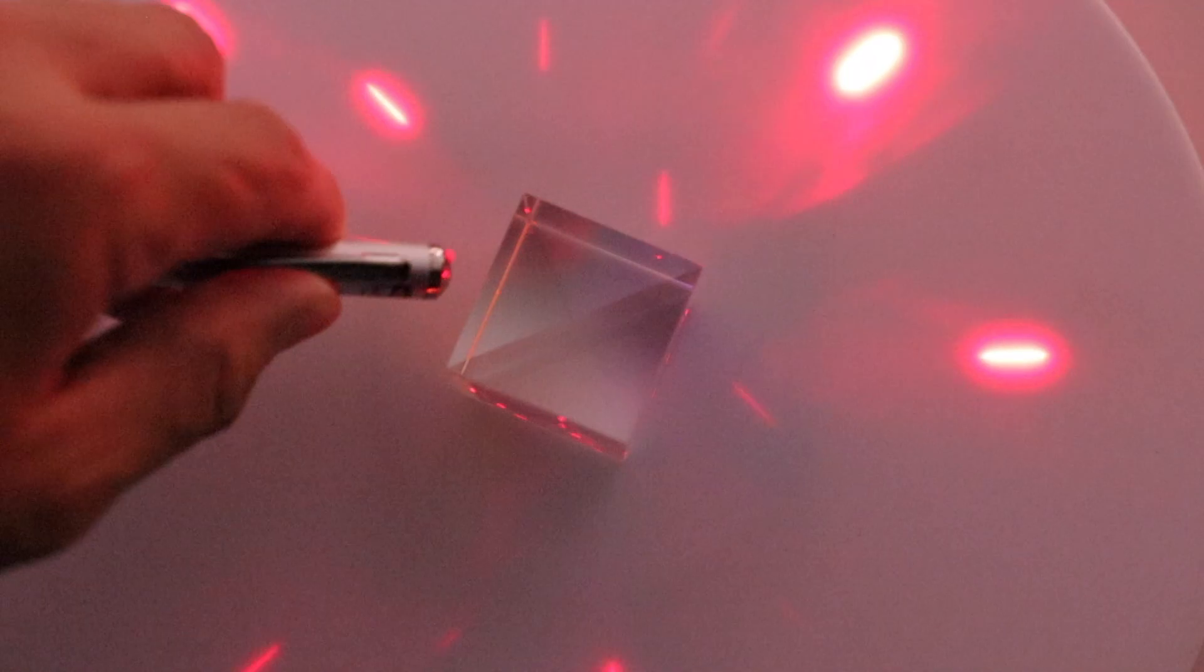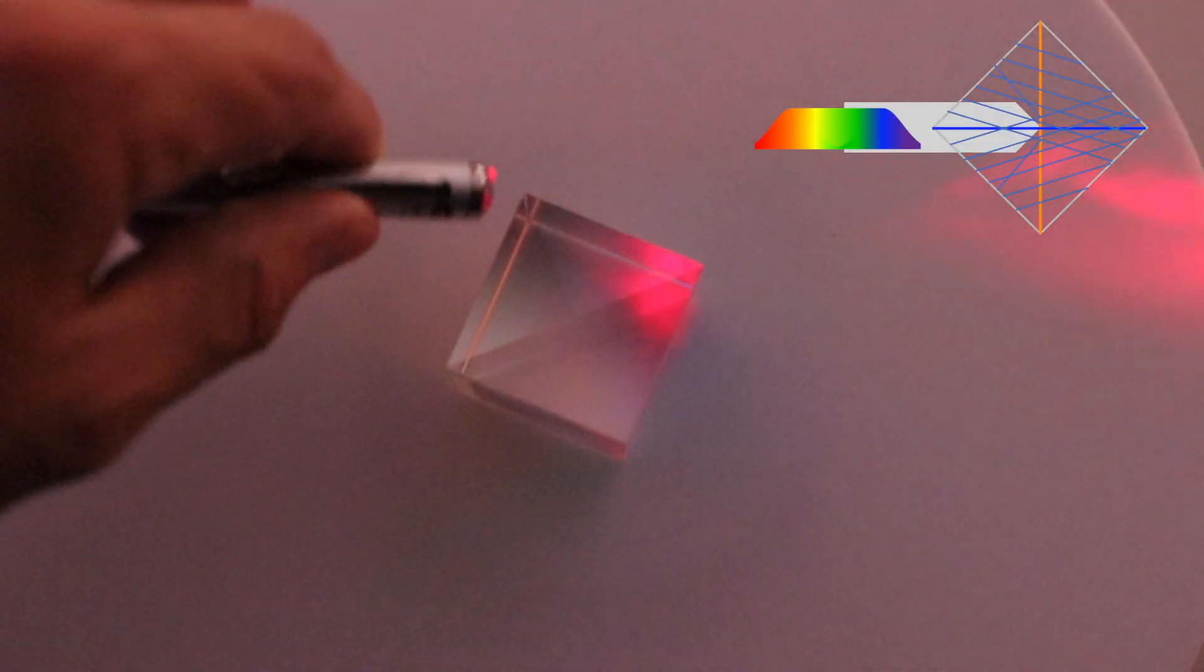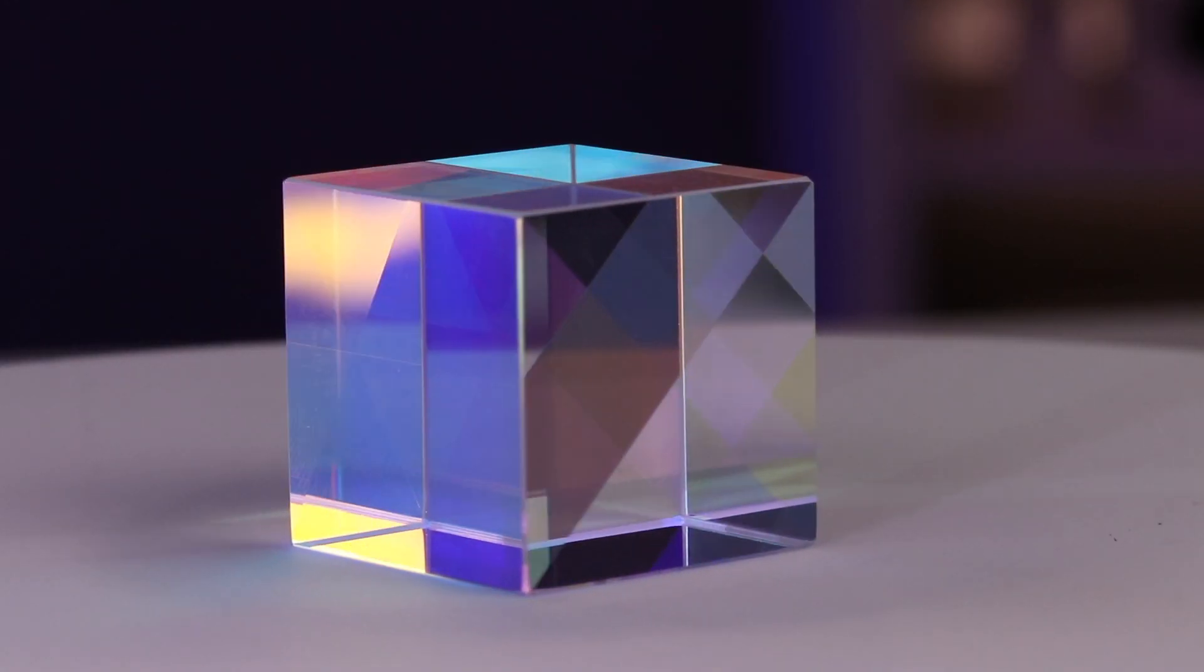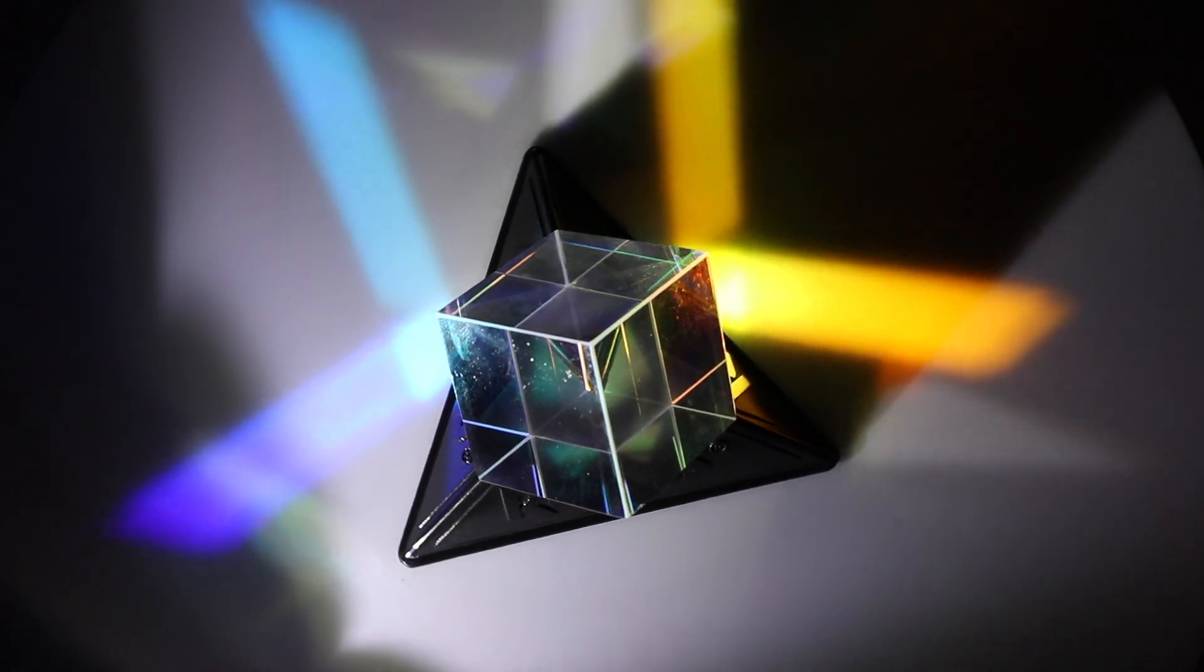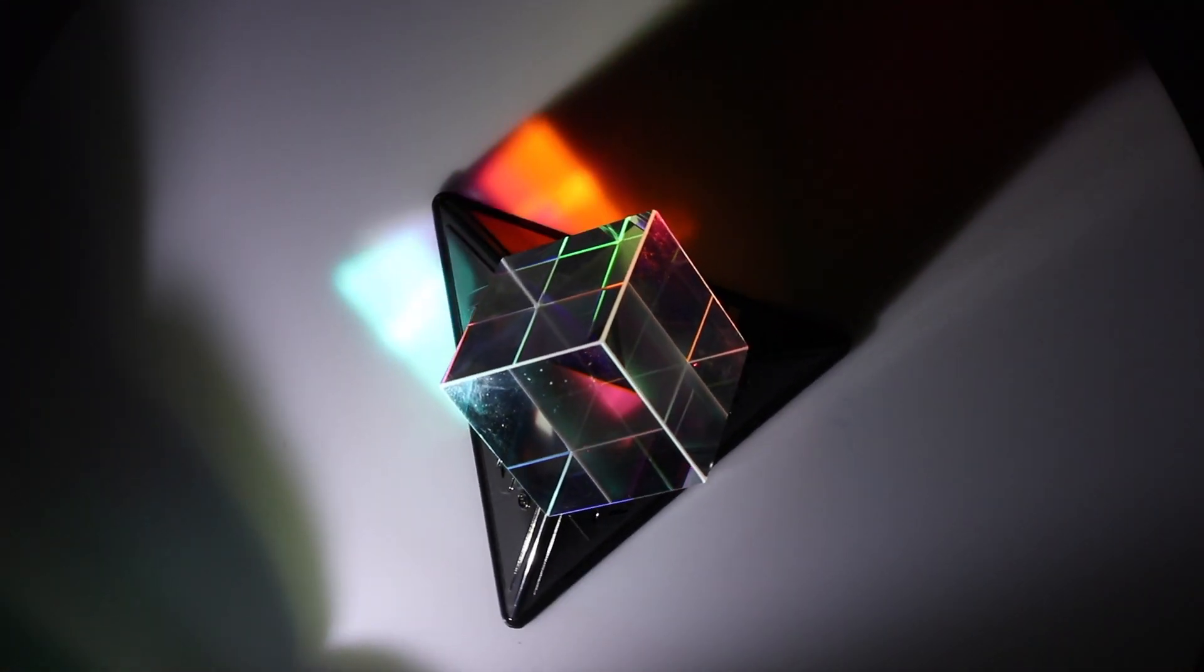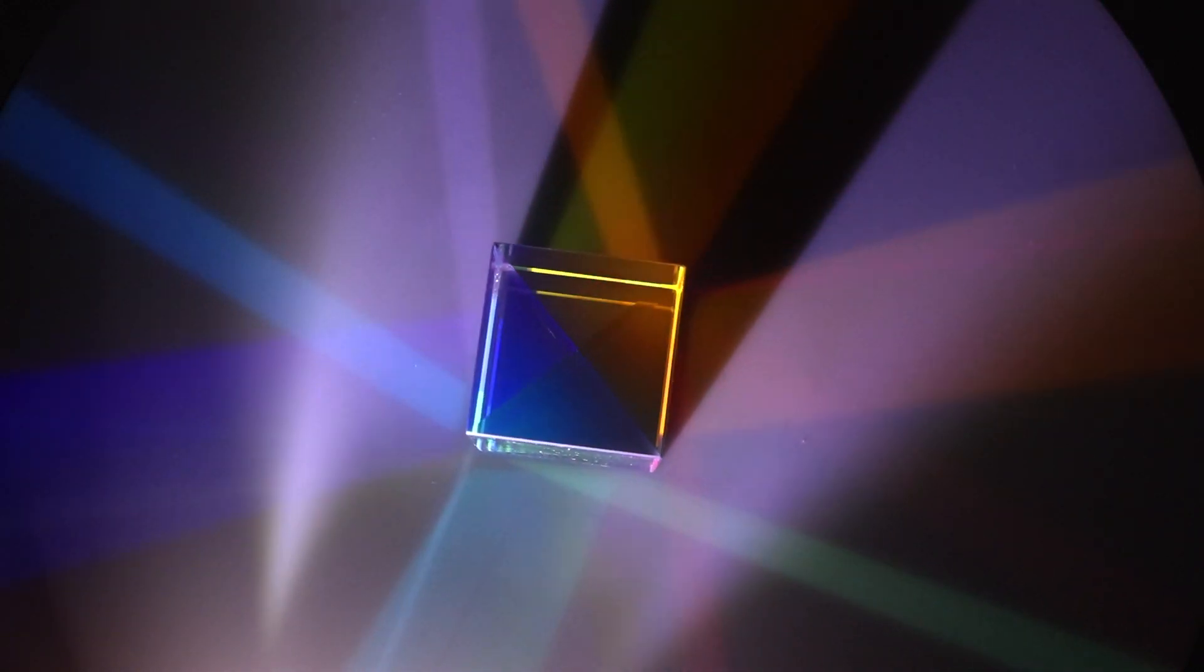There's refraction going on where the speed of light changes because of the different material, making it go at a slightly different angle when it comes in there. And it's going to bounce in between these different segments or these different triangles. And there's different filters that it's hitting at these different angles. And that's when you get all these crazy colors at these different angles.